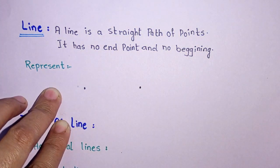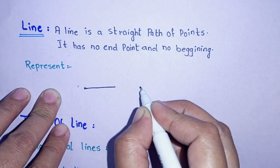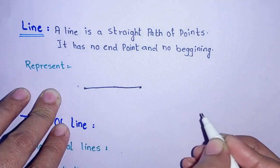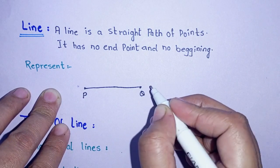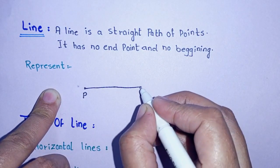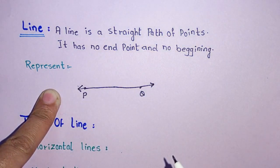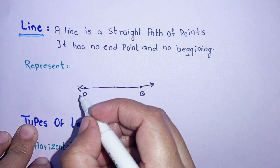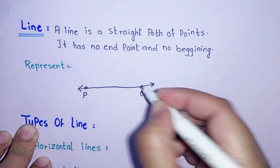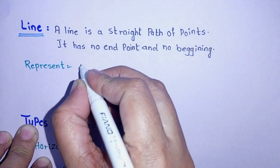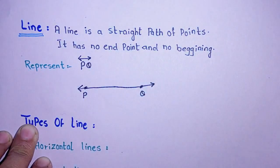The joining of points can also be called a line. Here I have two points, and I have connected them and named them P and Q. A line has no starting point and no ending point, so it continues infinitely in a straight path. The arrows represent that it keeps extending. We can represent this line as line PQ.